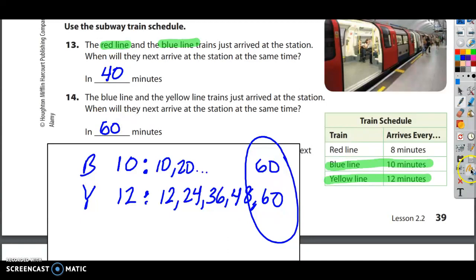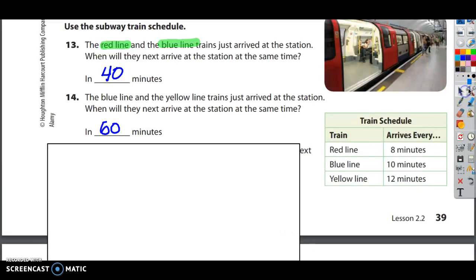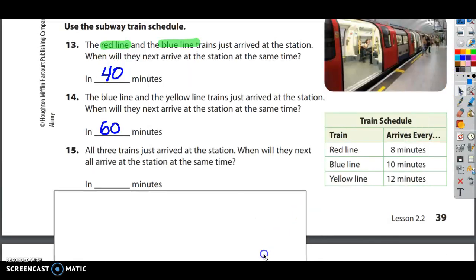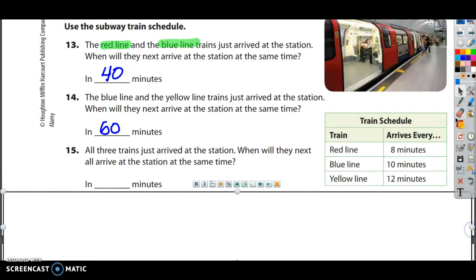All right. One more. The last one is the hardest because they ask for all three. Check this out. I'll read it with you. Mine's covered up, so I've got to move my whiteboard, and then I'll read it with you. So I think I can do, I think I can make space right here. Let's check this out. I can make this. All right. Last question. All three trains just arrived at the station. When will they next all arrive at the station at the same time? All three of them. So what I'm thinking about here is my LCM of 8 and 10 and 12.